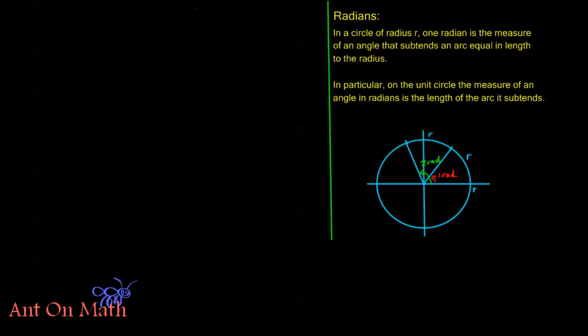Alright, welcome back to Ant On Math. This is the second video of unit 1 of our part 6 of our pre-calculus series. In this video, I'm going to be taking what we learned about radians in the last video, and we're going to use that to derive out a couple of cool things that we can do with circles now with respect to their angles.